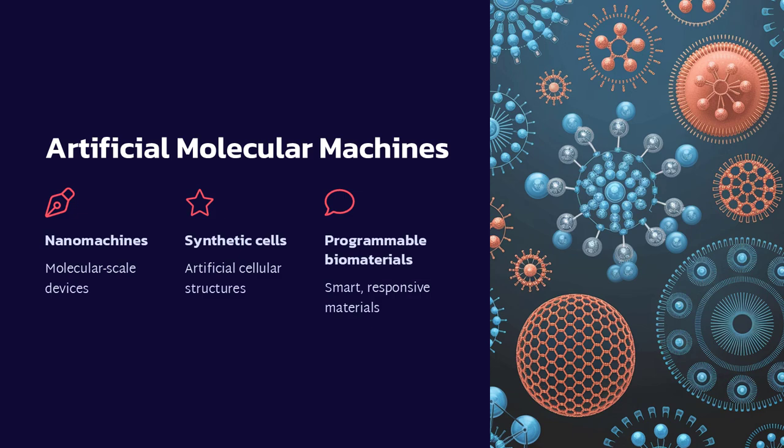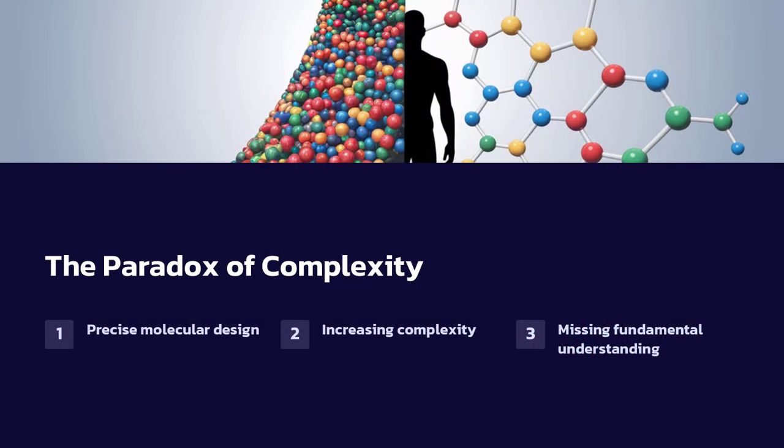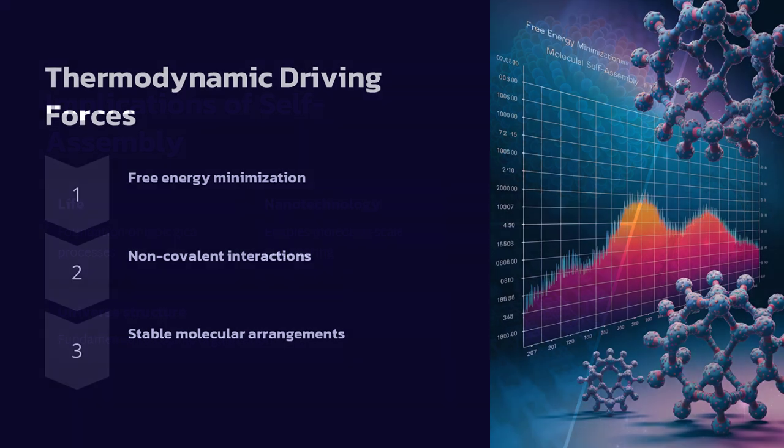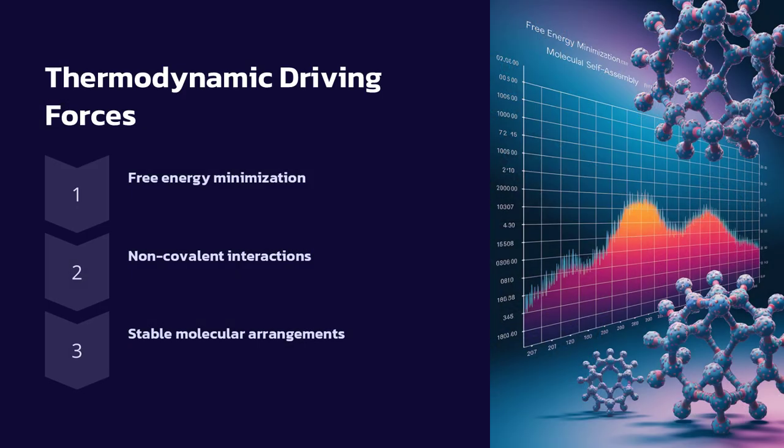How do molecules know how to arrange themselves? The secret lies in self-assembly, a process where molecules use fundamental physical forces like hydrogen bonding, electrostatic attraction, and hydrophobic interactions to find their most stable configuration. Rather than being manually arranged like puzzle pieces, these molecules feel their way into place, seeking the lowest energy state.